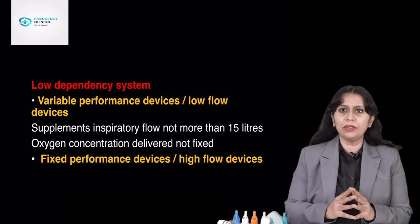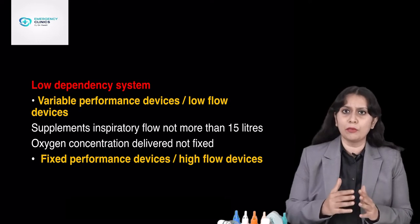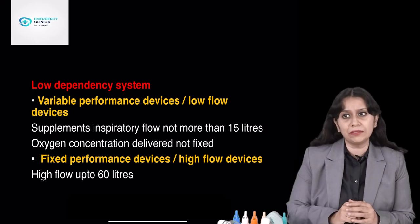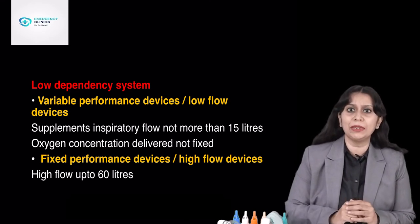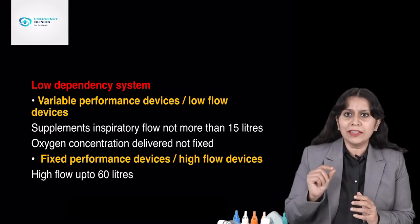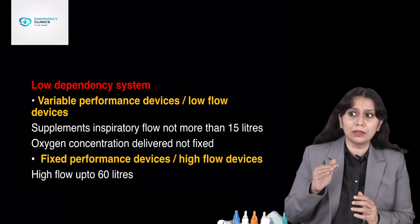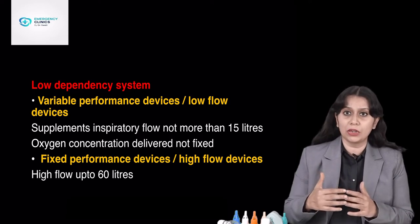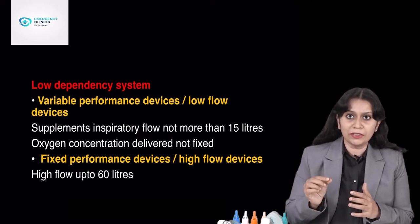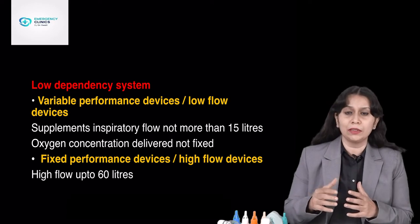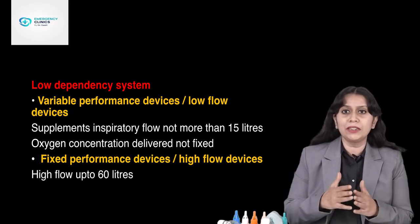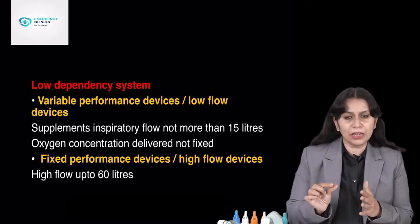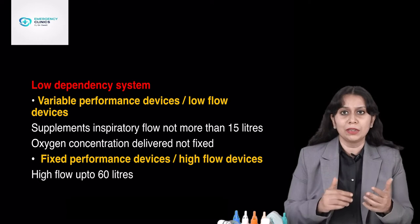In high flow devices, both these demerits are removed. A very high flow up to 60 liters per minute can be delivered. If a patient is tachypneic, the inspiratory time is very short, and when inspiratory time is less, a very high flow is required by the patient. As I told you, inspiratory flow equals tidal volume divided by inspiratory time — so the less the inspiratory time, the more the flow requirement.